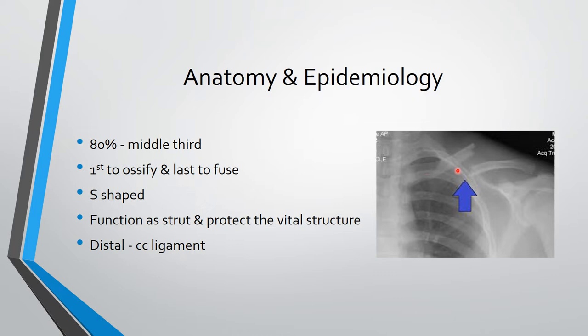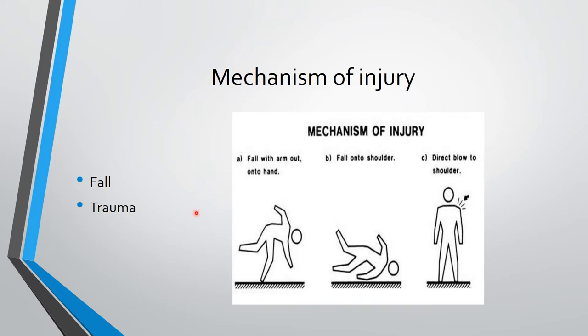The medial one third is convex forward and the lateral one third is concave backward. The clavicle acts as a strut and protects vital structures including the brachial plexus, subclavian vessels, and apical pleura. Distally there is a strong coracoclavicular ligament.